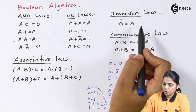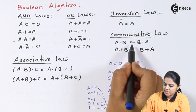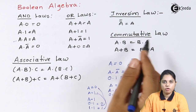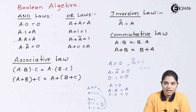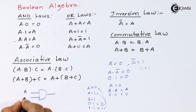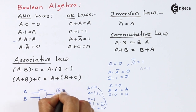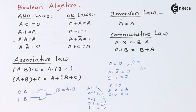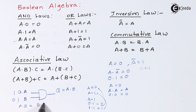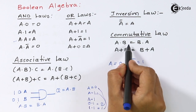Inversion law: A-bar-bar is equal to A. Now you can write A dot B equals B dot A, or A plus B equals B plus A — this is called the commutative law, meaning you can change the position of an input and it doesn't matter. For example, with an AND gate with inputs A and B and output Q equal to A dot B: if A is 0 and B is 1, or A is 1 and B is 0, multiplying gives 0 either way. So A dot B equals B dot A.